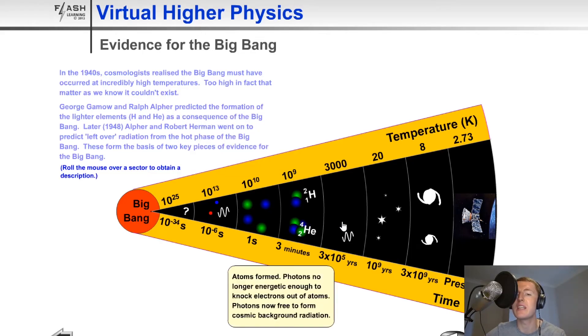Then a bigger jump in time to 3 times 10 to the 5 years after the Big Bang, the first atoms formed. Photons were no longer energetic enough to knock electrons out of atoms, and the photons were now free to form cosmic microwave background radiation.